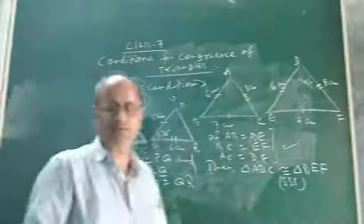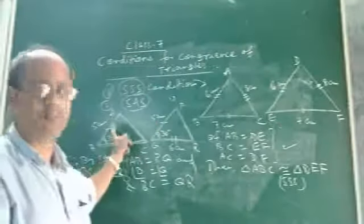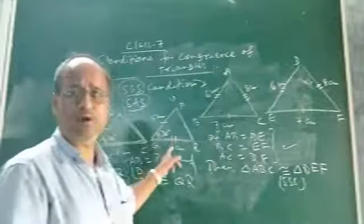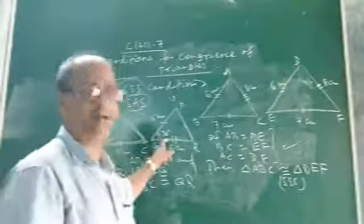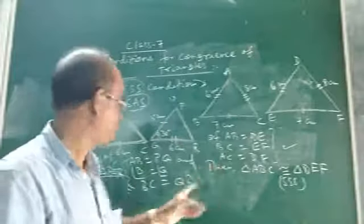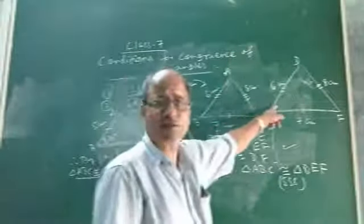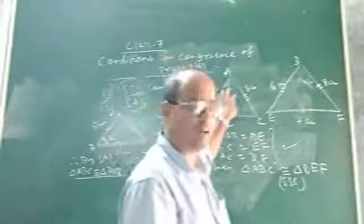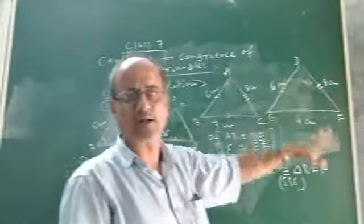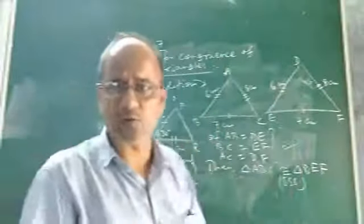So what is SAS congruence condition? It says: if two sides of one triangle are respectively equal to two corresponding sides of another triangle, and the included angle between them is the same, then the two triangles are congruent. This is the mathematical form of the SAS congruence condition.